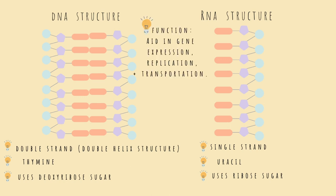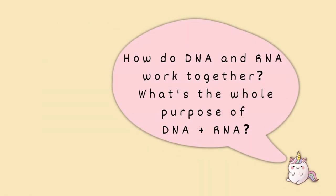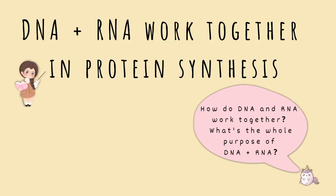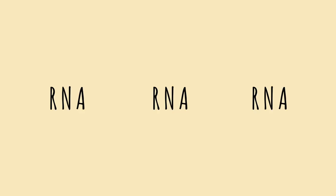The function of DNA is to aid in gene expression, replication, and transportation. RNA has many functions, but to basically sum them all up, RNA assists DNA. DNA and RNA work together in a process called protein synthesis — in other words, they work together to make proteins. Before getting into the steps of protein synthesis — those being transcription and translation — let's go over the different types of RNA you're going to see.